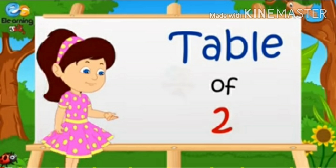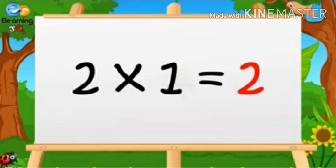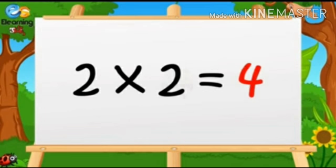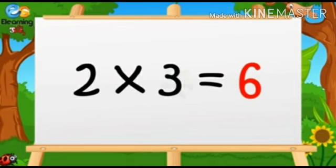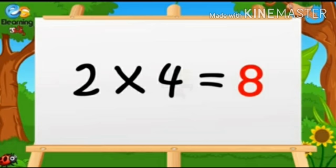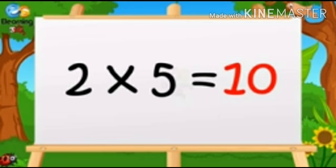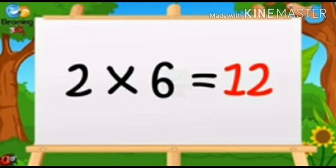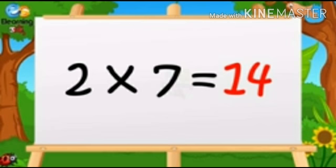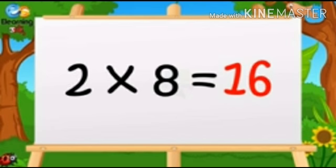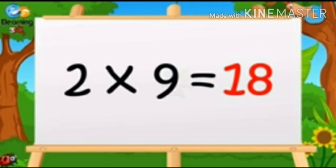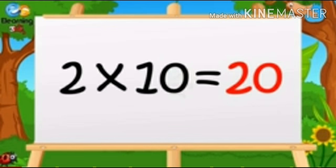So let's learn table of 2. 2 1s are 2, 2 2s are 4, 2 3s are 6, 2 4s are 8, 2 5s are 10, 2 6s are 12, 2 7s are 14, 2 8s are 16, 2 9s are 18, 2 10s are 20.